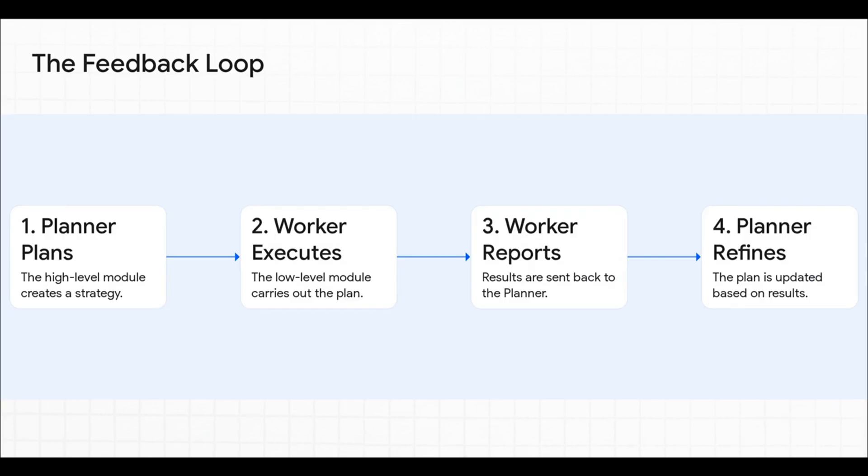Simple as that. And this is where the magic happens. It's all about the feedback loop. The planner comes up with a plan, the worker executes it, and reports back on how it went. Then the planner looks at those results and says, okay, let's refine that plan. This back and forth lets the model check itself, correct its own reasoning, and get smarter as it goes.